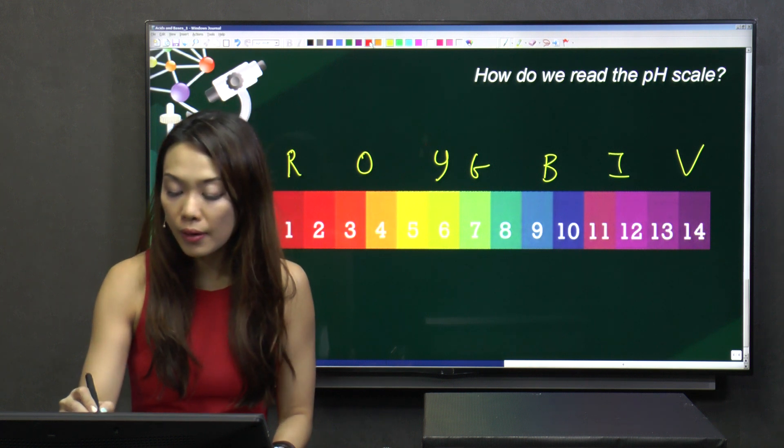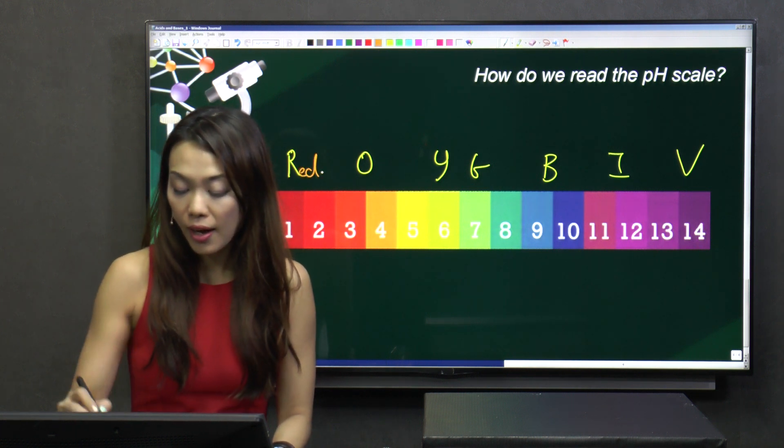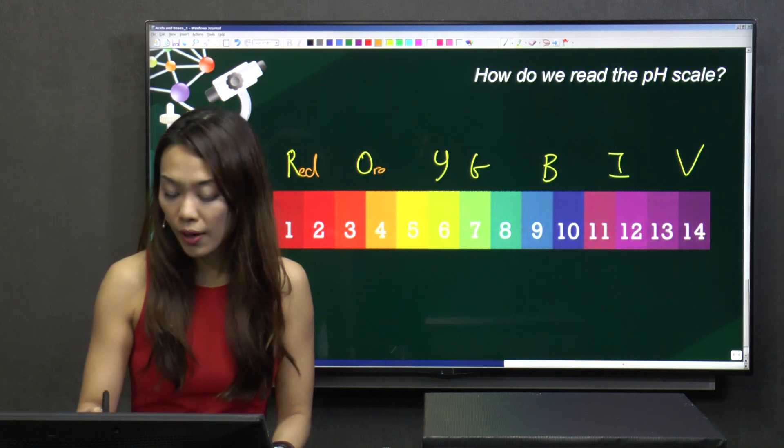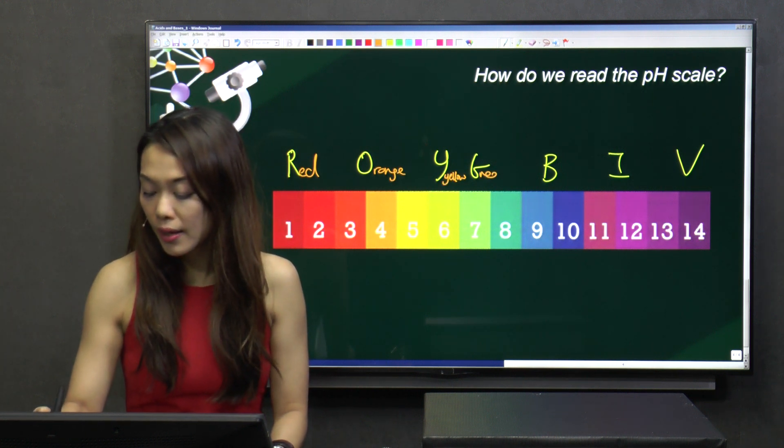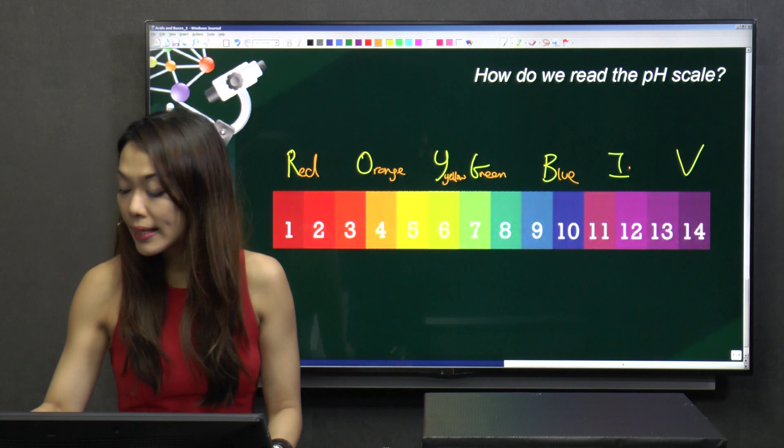ROY represents red, orange, yellow, green, blue, indigo, and of course violet.